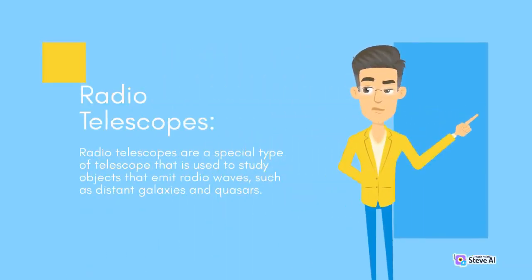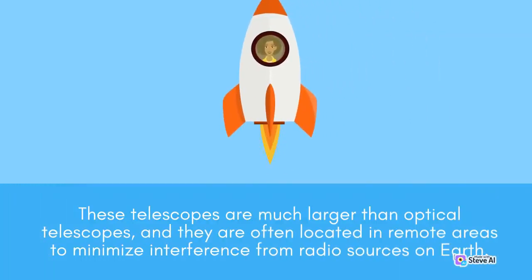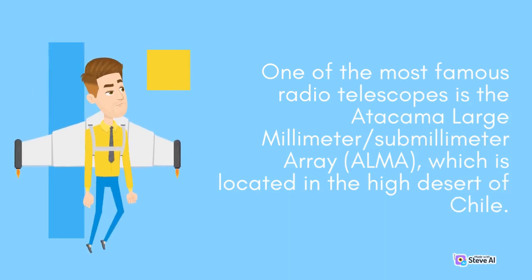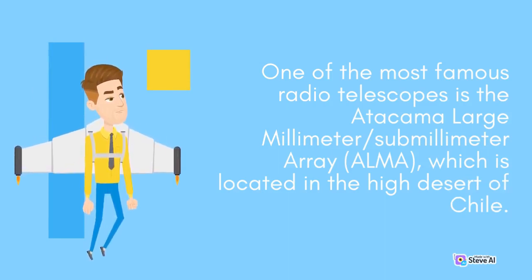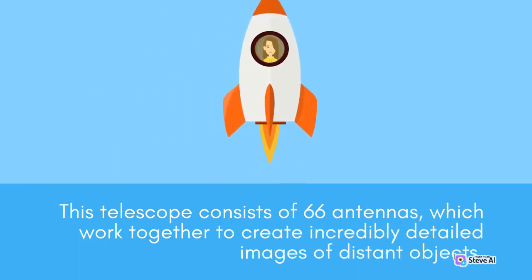Radio Telescopes are a special type of telescope used to study objects that emit radio waves, such as distant galaxies and quasars. These telescopes are much larger than optical telescopes, and they are often located in remote areas to minimize interference from radio sources on Earth. One of the most famous radio telescopes is the Atacama Large Millimeter-Submillimeter Array, ALMA, which is located in the high desert of Chile. This telescope consists of 66 antennas.